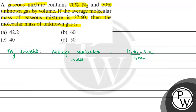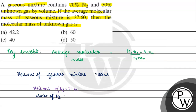If we think that the total volume of the gaseous mixture is 100 ml, then the volume of nitrogen gas will be 70 ml. The moles of nitrogen gas will be the volume of nitrogen gas divided by 22,400, which comes out to 0.003125 moles.